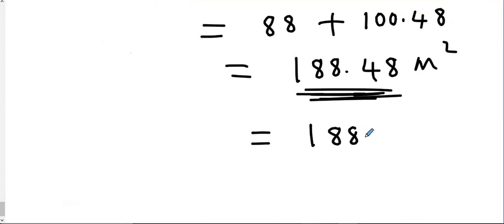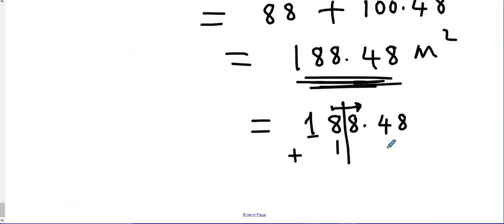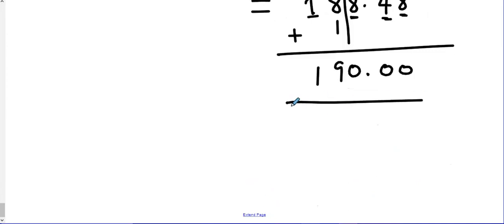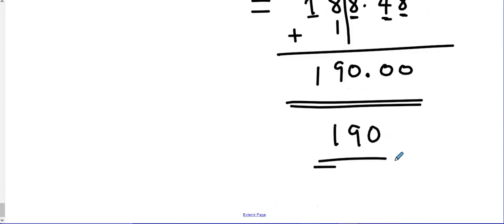Any zeros to the right of the decimal point can be cancelled. So the final answer is 190 meters squared. I hope you can now do corrections.